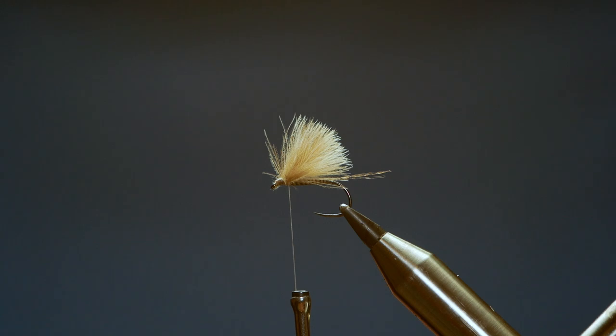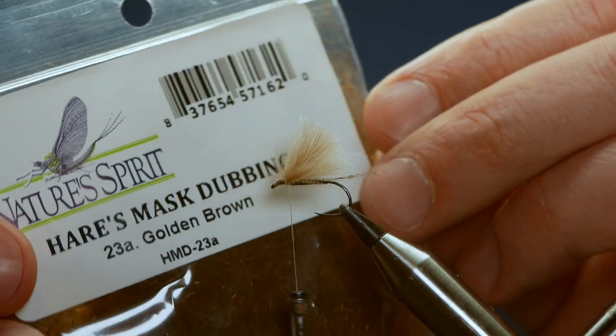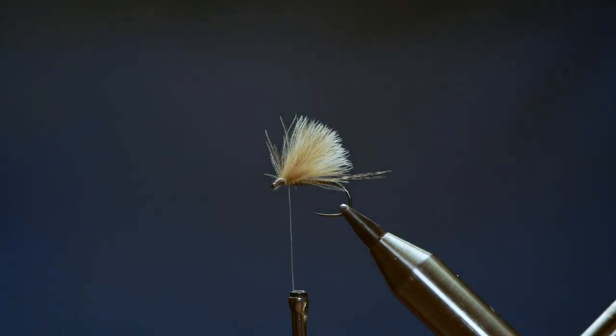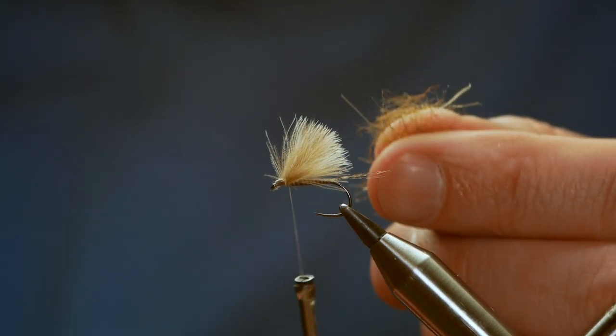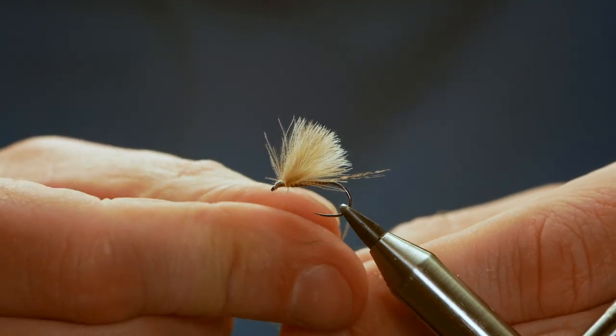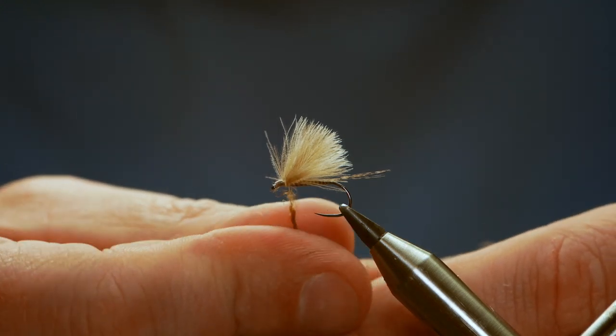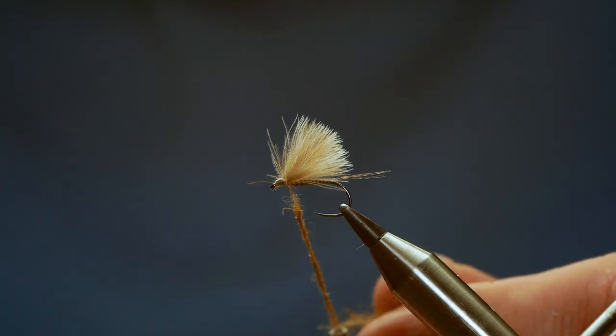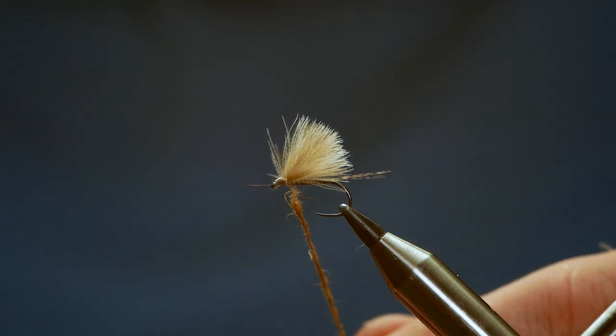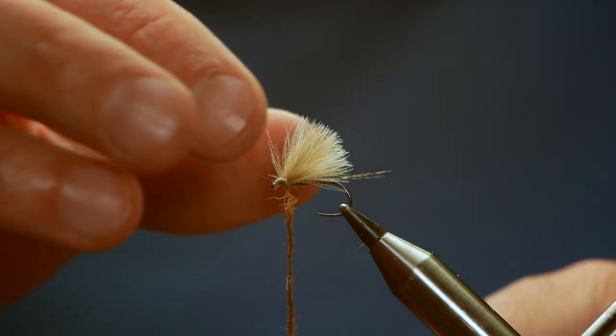Next, I'm going to add a little bit of dubbing and what I'm using is Nature Spirit's hair mask dubbing. This is golden brown and I've already taken a little bit out of the packet. It's got some fine glitzy material in it, so it gives the fly, which is quite a subdued fly really, just a little bit of sparkle to it. You don't need much of this dubbing and it doesn't need to be hard dubbed on with your fingers.